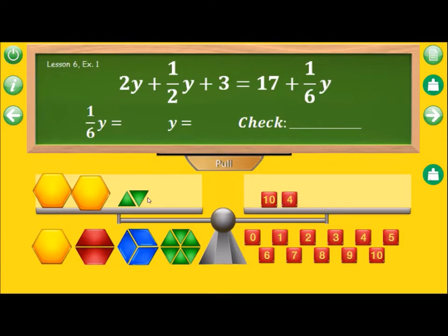That means that each green block is equal to one, or that each one sixth of y, that's another name for the green block, one sixth of y is equal to one. Therefore, y would be six.